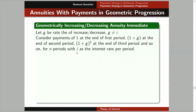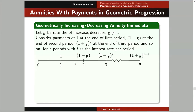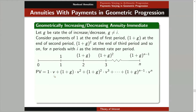Using i as the effective rate of interest per period, to visualize this problem we consider a time diagram. With this series of payments, we get the present value one by one. If you notice, this forms a geometric series with common ratio equal to (1 + g) times v — because that's what you multiply to get the next term.